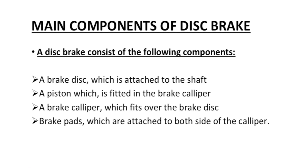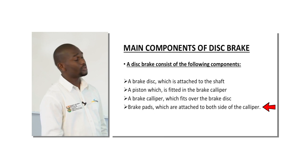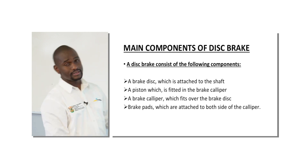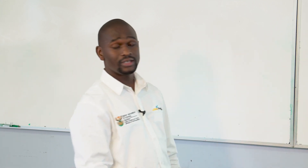Main components of a disc brake: number one, it's a brake disc that is attached to the shaft. Two, it's pistons, which are fitted in the brake calipers. It also consists of a brake caliper, which fits over the brake disc. And it also has brake pads that are attached on both sides of the caliper. These are the main components of the disc brake.